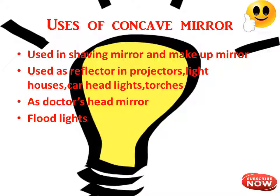Concave mirrors are also used as a doctor's head mirror — when you visit a doctor, you may have seen the head mirror used to focus a parallel beam of light on internal body parts such as the throat, ear, nose, and teeth. They are also used to collect heat radiations in solar cookers, and in floodlights — where when the source of light is placed between the pole and focus, a diverging beam is produced after reflection.